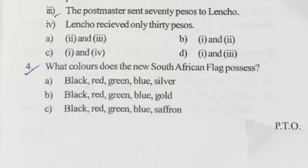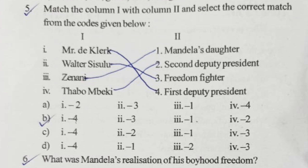Question five: match the column. On the left side, F.W. de Klerk is the first deputy president. Walter Sisulu is a freedom fighter. Zinani is Mandela's daughter. Thabo Mbeki is the second deputy president. Option B is correct.